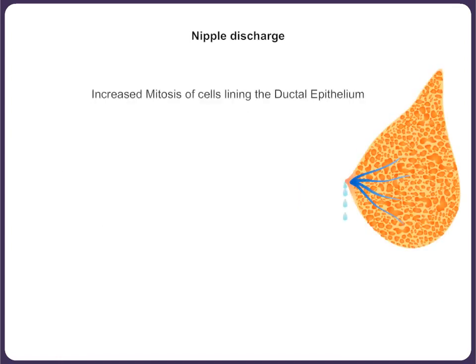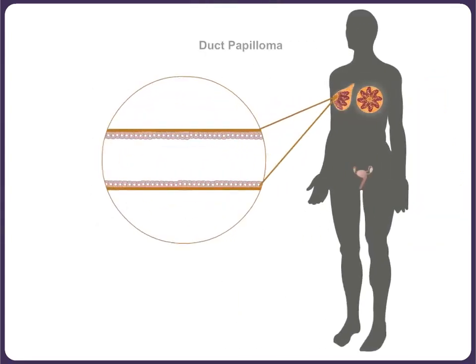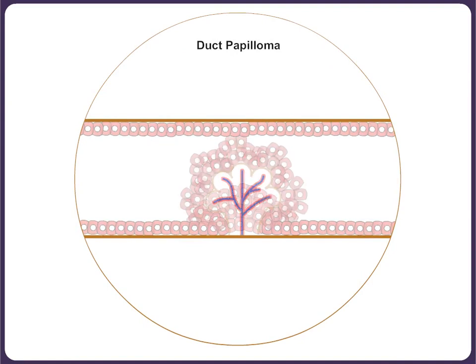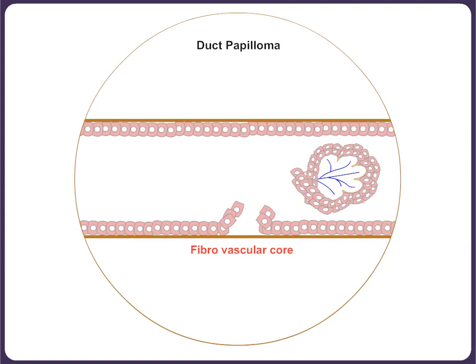Proliferation of the ductal epithelium leads to ductal hyperplasia, which may result in increased secretion, presenting as physiological nipple discharge in some ladies. Localized growth of cells within a dilated duct leads to papilloma formation. It has a central fibrovascular core and papillae lined by myoepithelial and luminal cells. Sometimes, the papilloma may undergo infarction by torsion of the stalk, resulting in bloody nipple discharge.